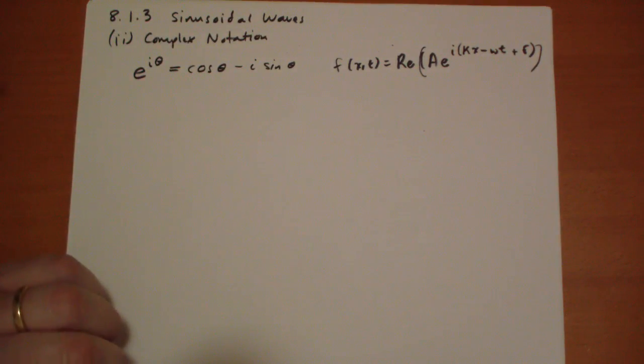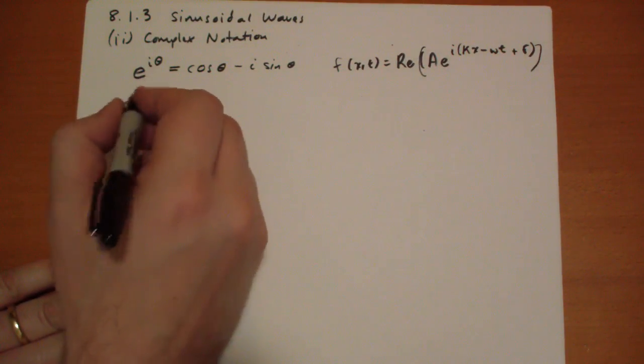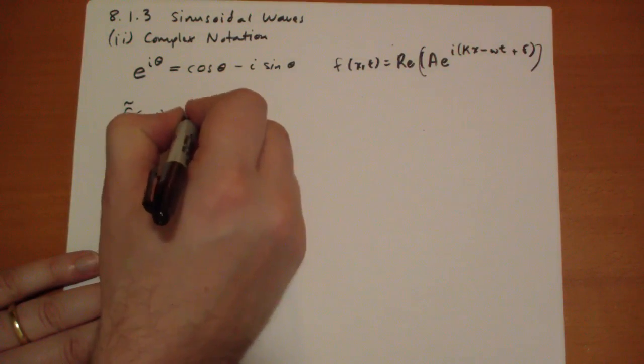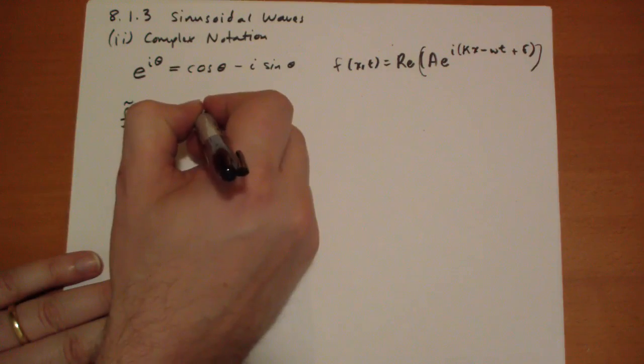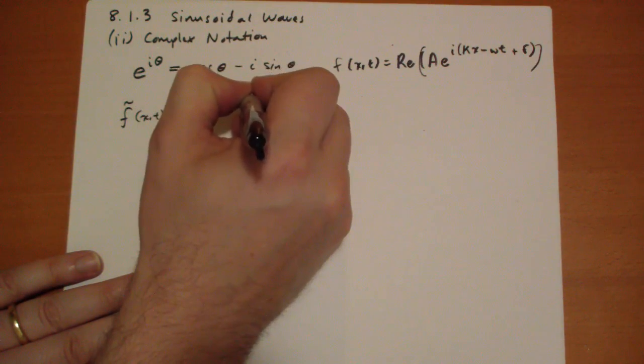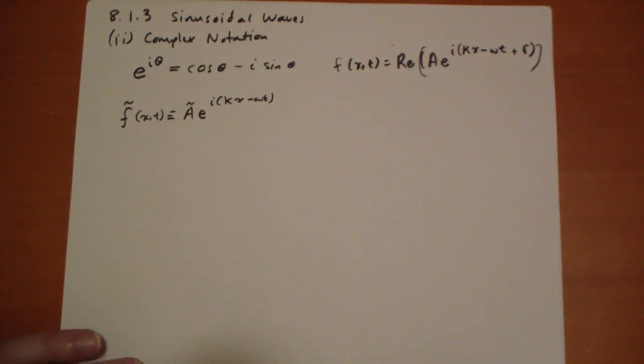If we had a complex wave function, f with the squiggly hat, okay? Because we're going to get back a number that's both real and imaginary. So we have a squiggly hat A, this complex A, E to the i kappa x minus omega t. Okay? If we had that kind of function,